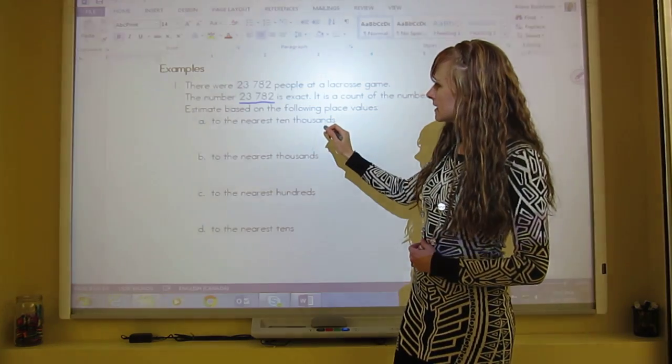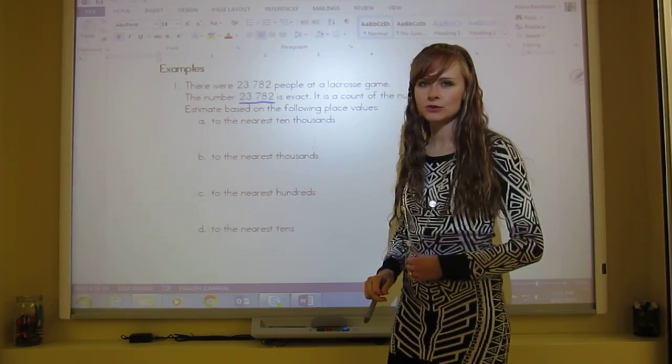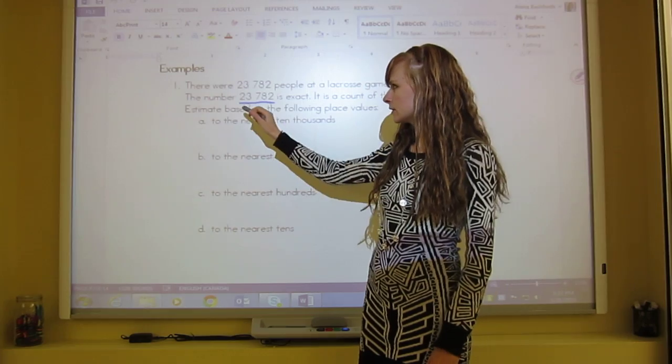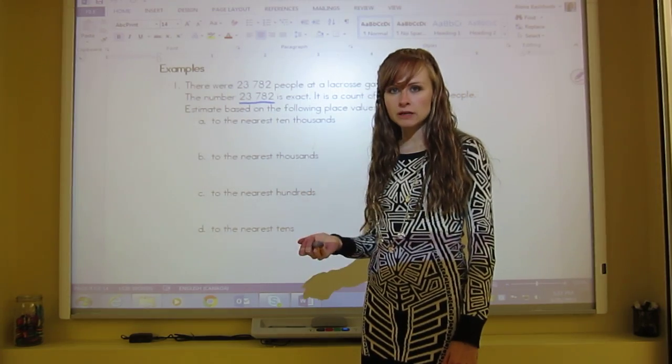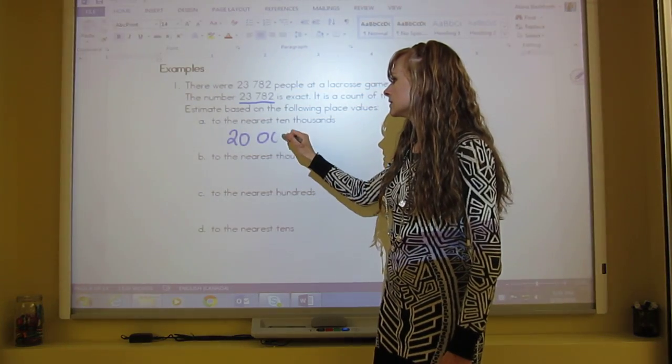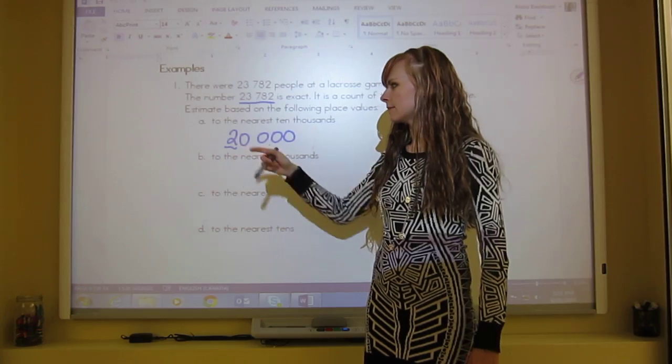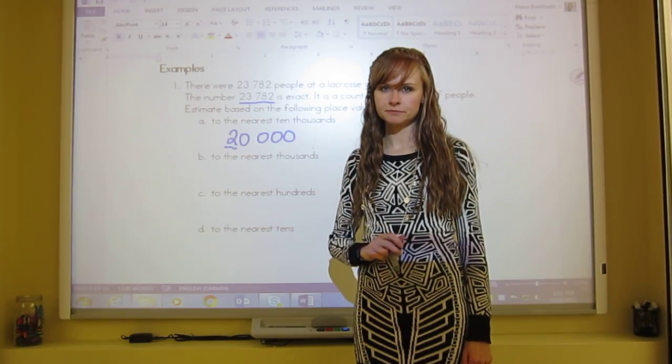Okay, so to the nearest 10,000. This is ones, tens, hundreds, thousands, 10,000. So that two right there, that's 10,000. So we look right next door, it's a three, which is four or less. So we let the two rest. And we put zeros in place of everything else, since we want to the nearest 10,000. That means everything after it is zero. So it's 20,000.